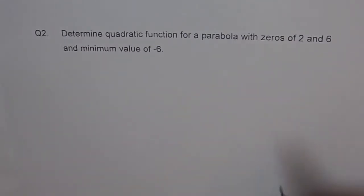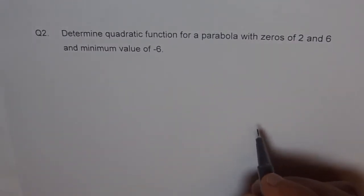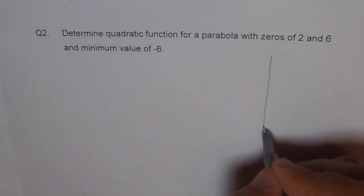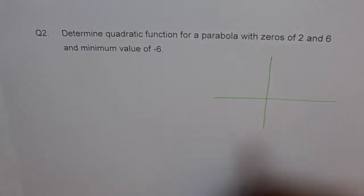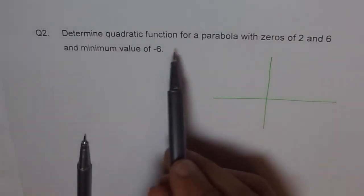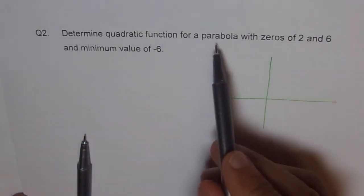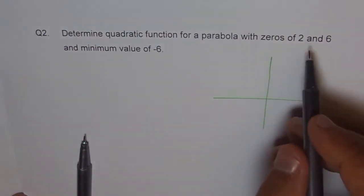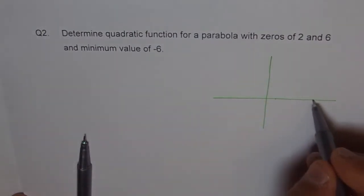So let's try to sketch it first and then move on to find the answer. Let me do a rough sketch. Let's say this is our axis and then we have a quadratic function that is represented by a parabola with zeros at 2 and 6. So these are on this side.